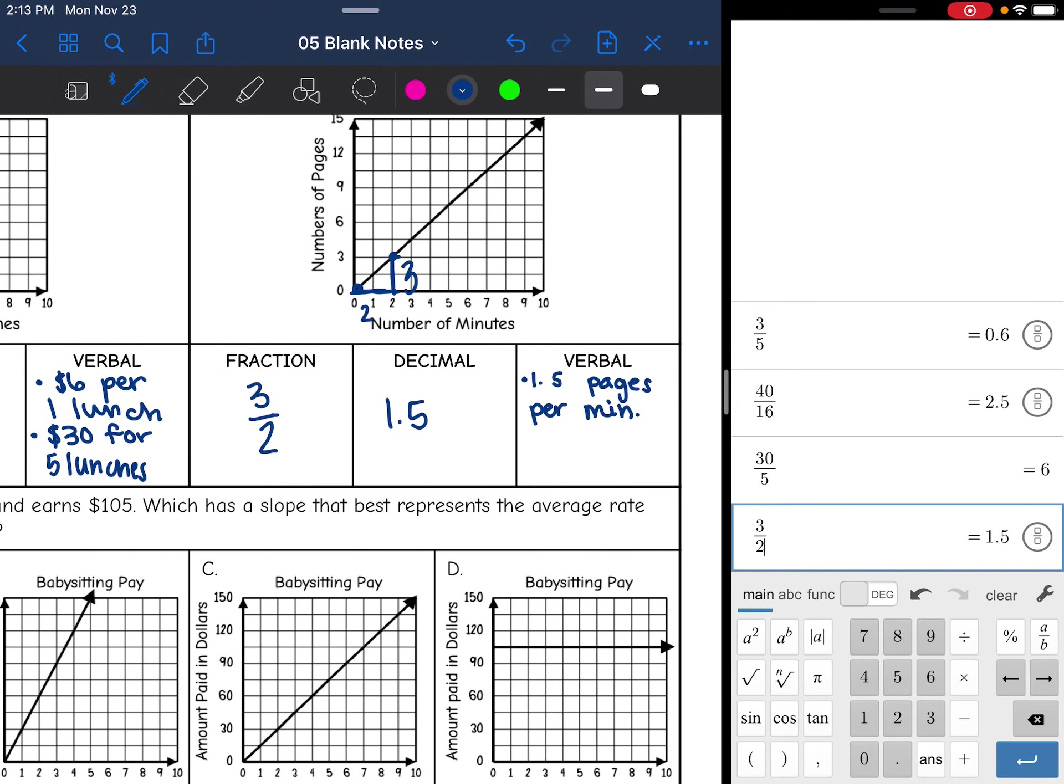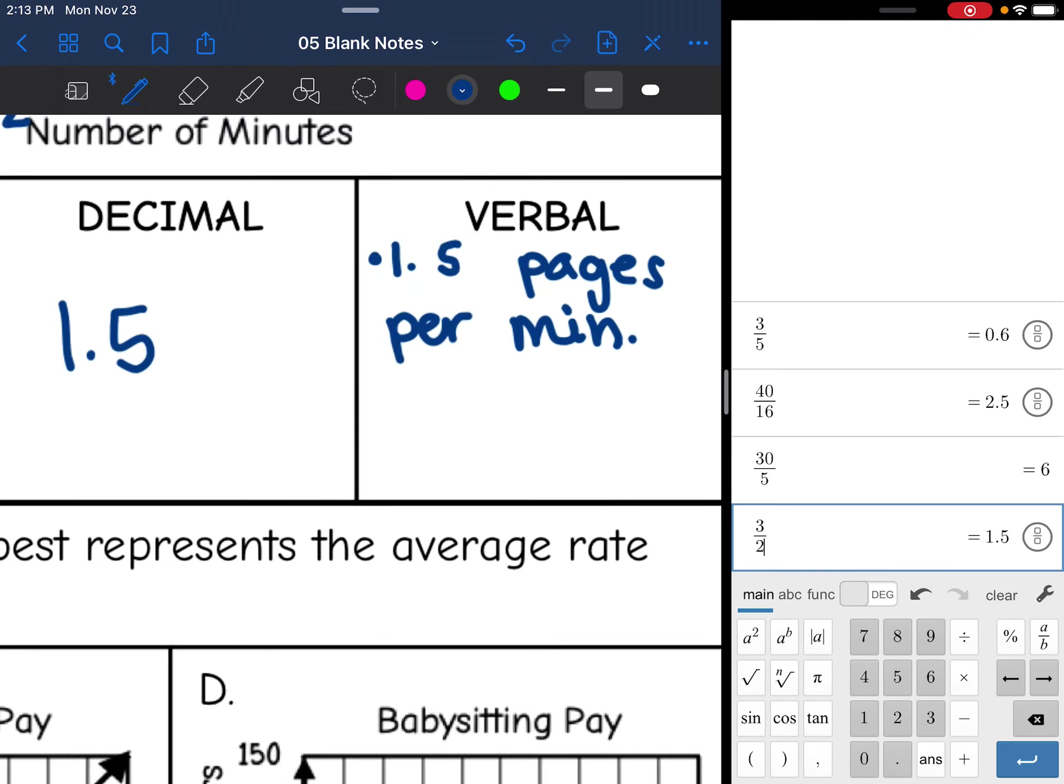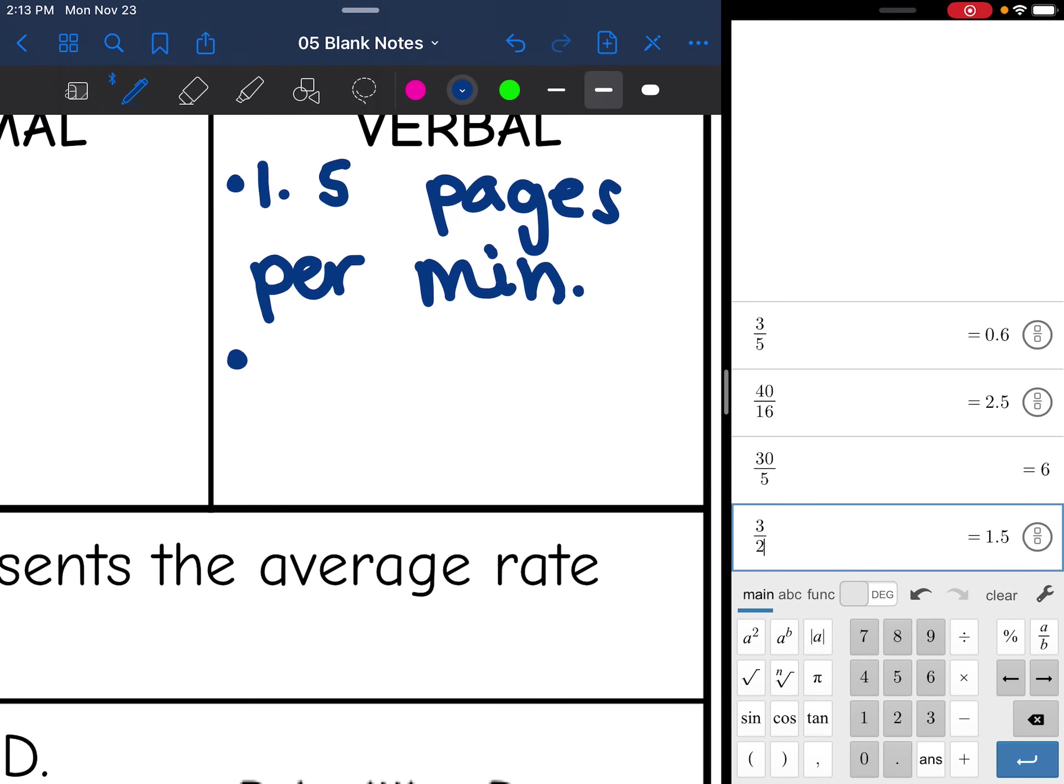Then for my second one, I'm going to use the numbers that were represented in my rise over run. 3 over 2. That means 3 pages every 2 minutes.